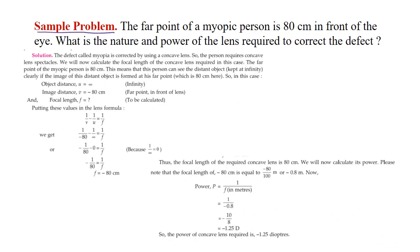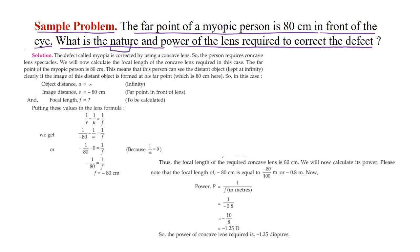Sample problem: The far point of a myopic person is 80 cm in front of the eye. What is the nature and power of the lens required to correct the defect? We know that for a myopic person, we use a concave lens. Let us verify this mathematically.